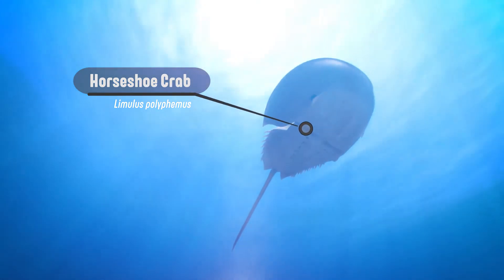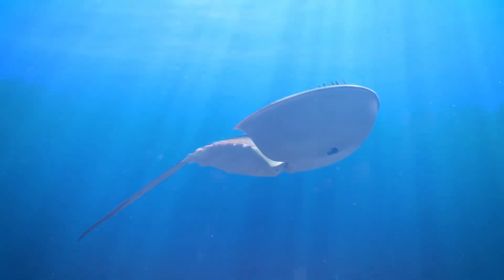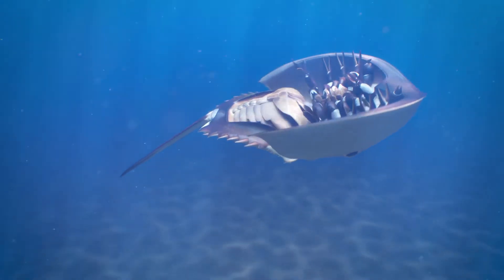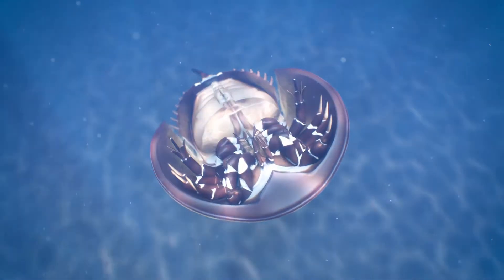This is an Atlantic Horseshoe Crab, which can be found along the American Atlantic coast and in the Gulf of Mexico. Despite its name, it is in fact related to spiders.